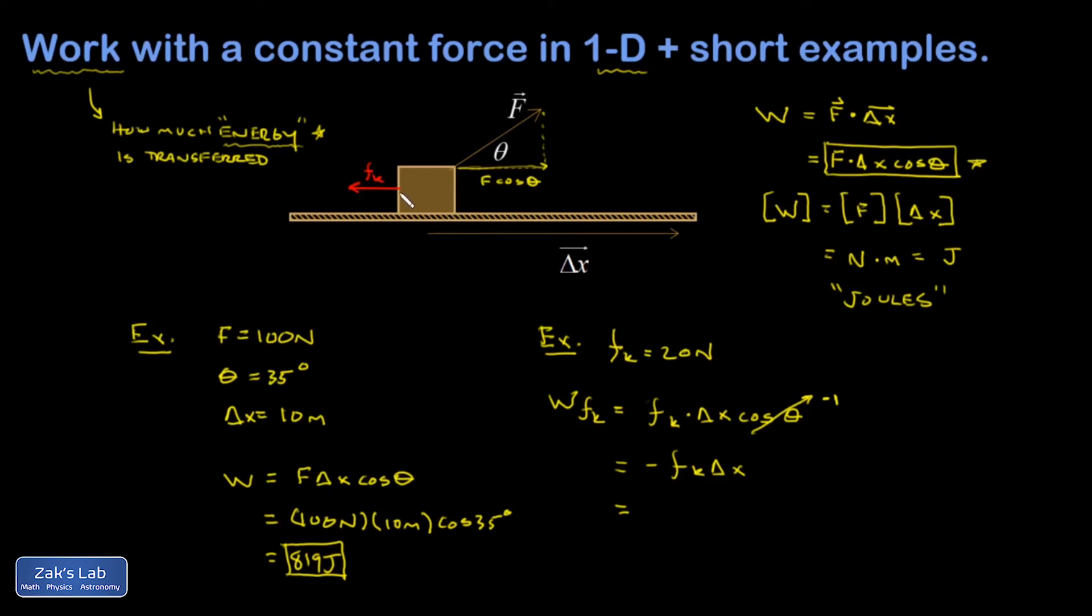So I end up with negative 20 newtons multiplied by 10 meters, which is negative 200 newton meters or joules. In this example, the applied force at an angle pumped 819 joules of energy into the object, making it go faster, and the friction force sucked out 200 joules of energy, making it go slower than it would have gone otherwise.